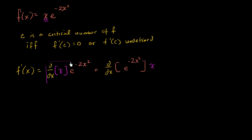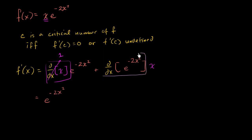The derivative of x with respect to x is just equal to one. So this first part is going to be equal to e to the negative 2x squared. Now for the derivative of e to the negative 2x squared, we apply the chain rule: the derivative of e to the negative 2x squared with respect to negative 2x squared is just e to the negative 2x squared.